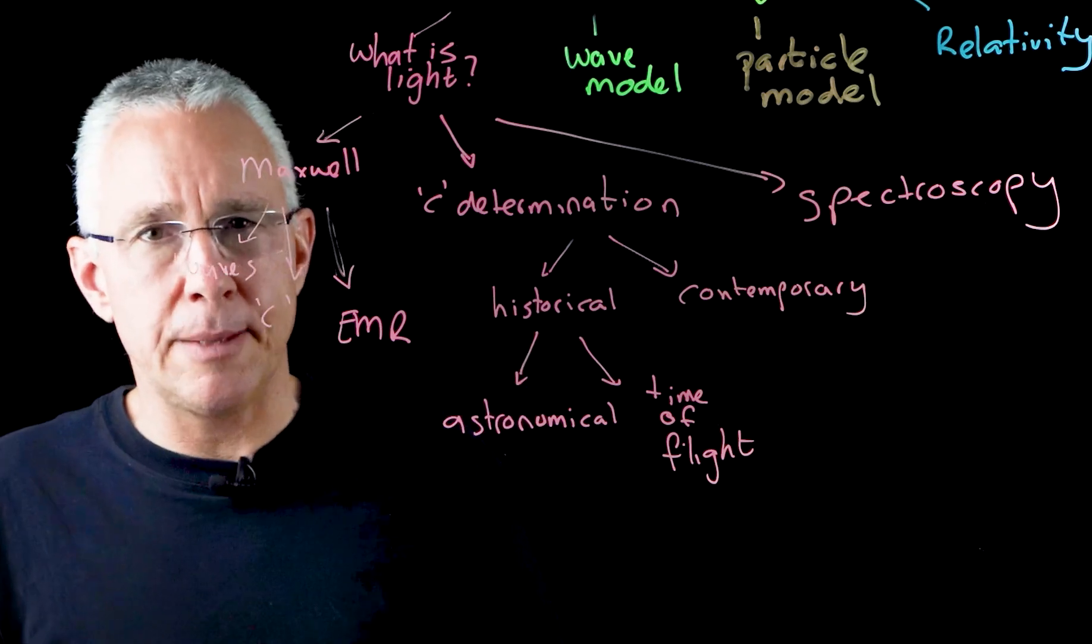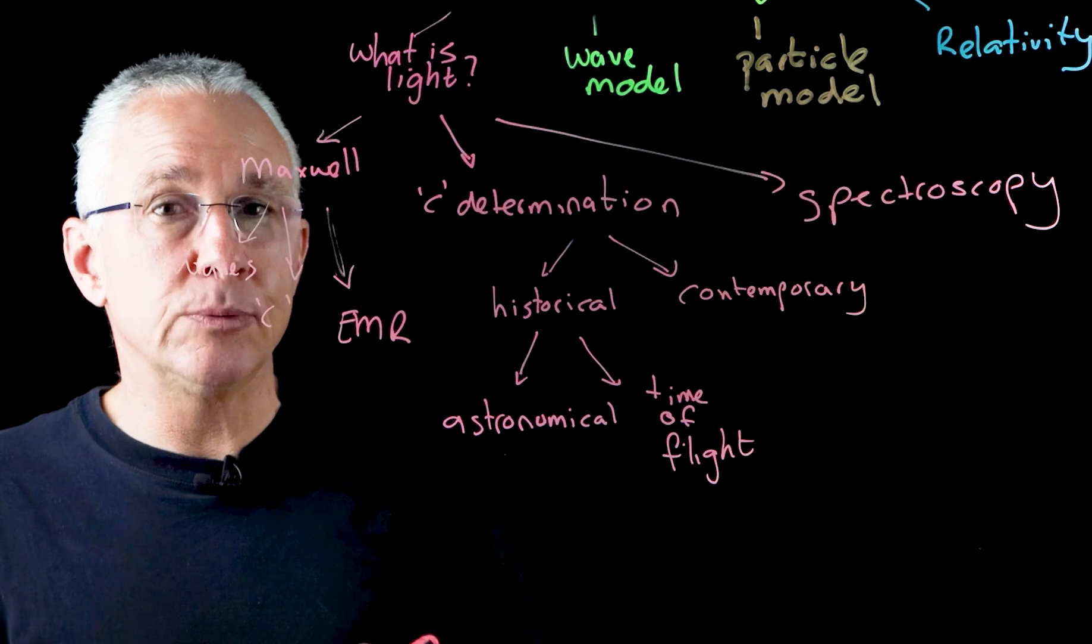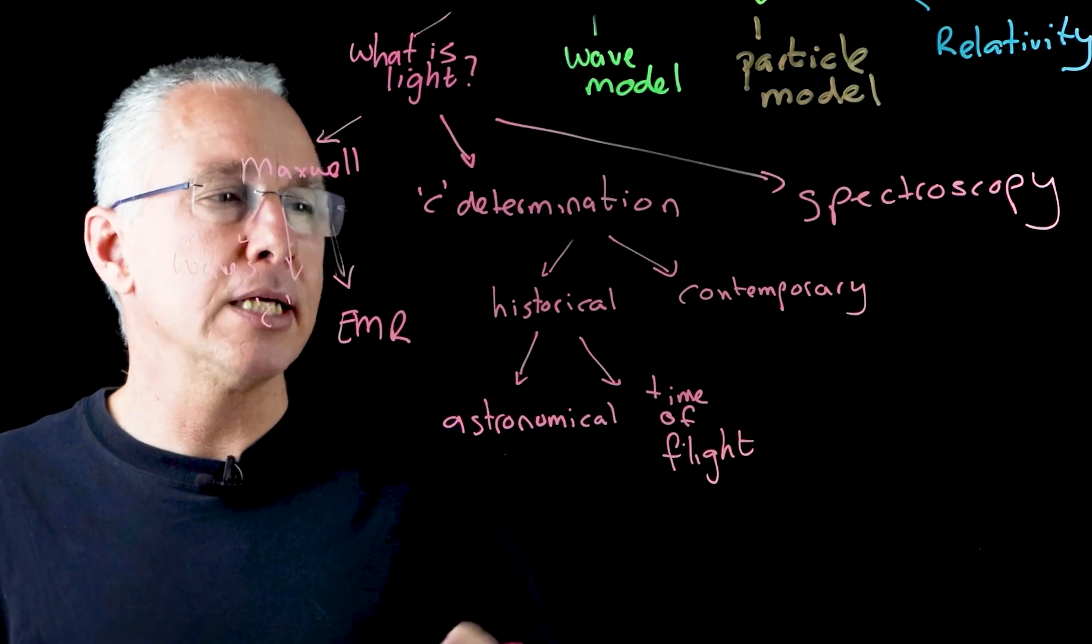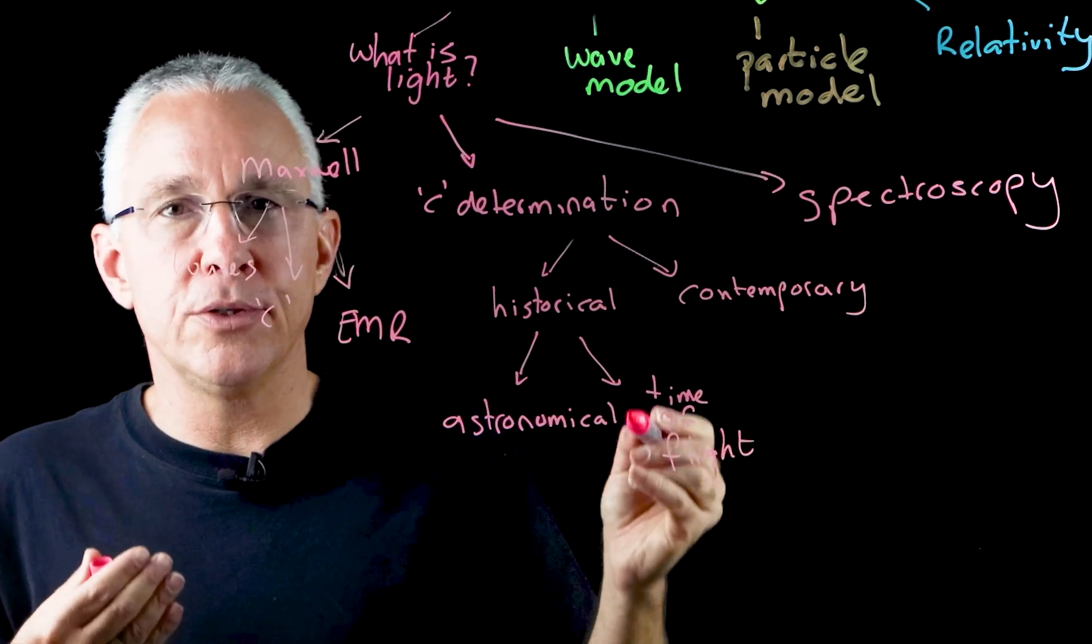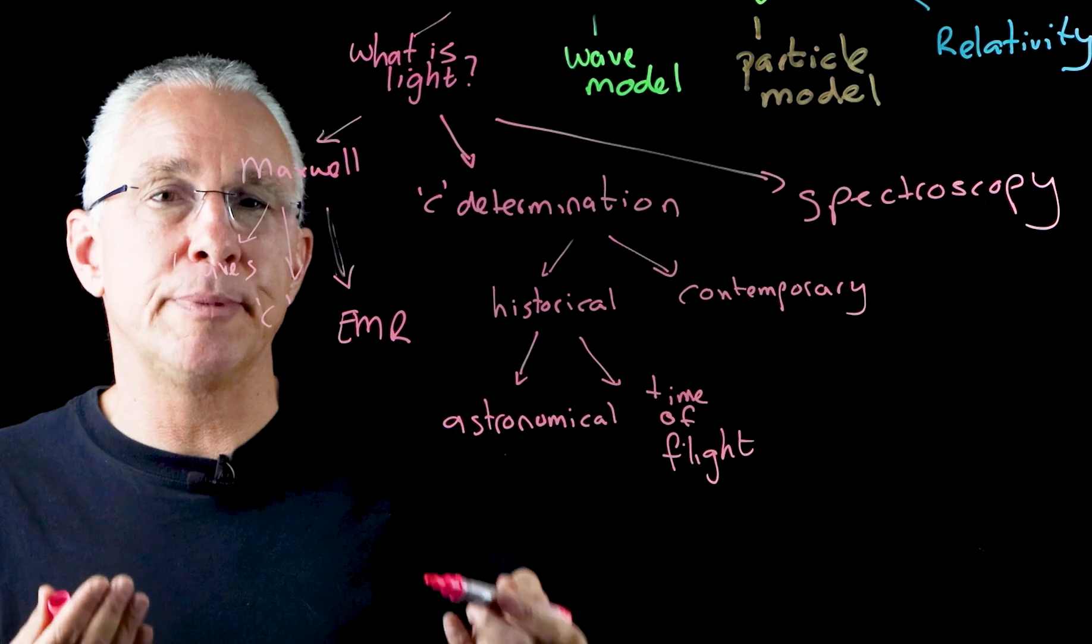But what about contemporary? Well, contemporary, we have the work of Essen in the 1940s, which used standing waves to determine a more precise value for the speed of light. But critically, what I want you to remember is the fact that the speed of light is no longer actually experimentally determined. It is now set.